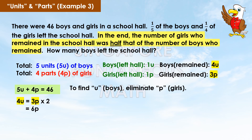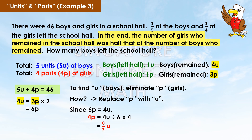To find u, eliminate p by replacing p with u. Since 6p equals 4u, then 4p equals 8 over 3 u. Substituting: 5u plus 4p, which is also 8 over 3 u, equals 46. This gives 23 over 3 u equals 46, so 1u equals 6. Therefore, 6 boys left the school hall.